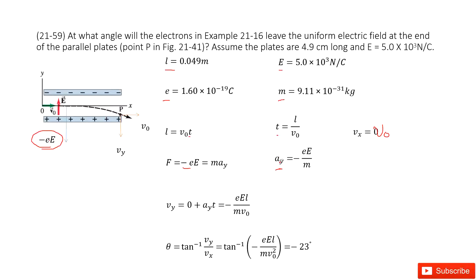The next step, we need to find the velocity in y component. The initial velocity in y component is zero plus acceleration times t. So we use this term times this term. We get the answer there.